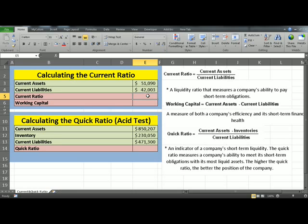To calculate, click in E5, equals Current Assets, divided by Current Liabilities, hit Return.